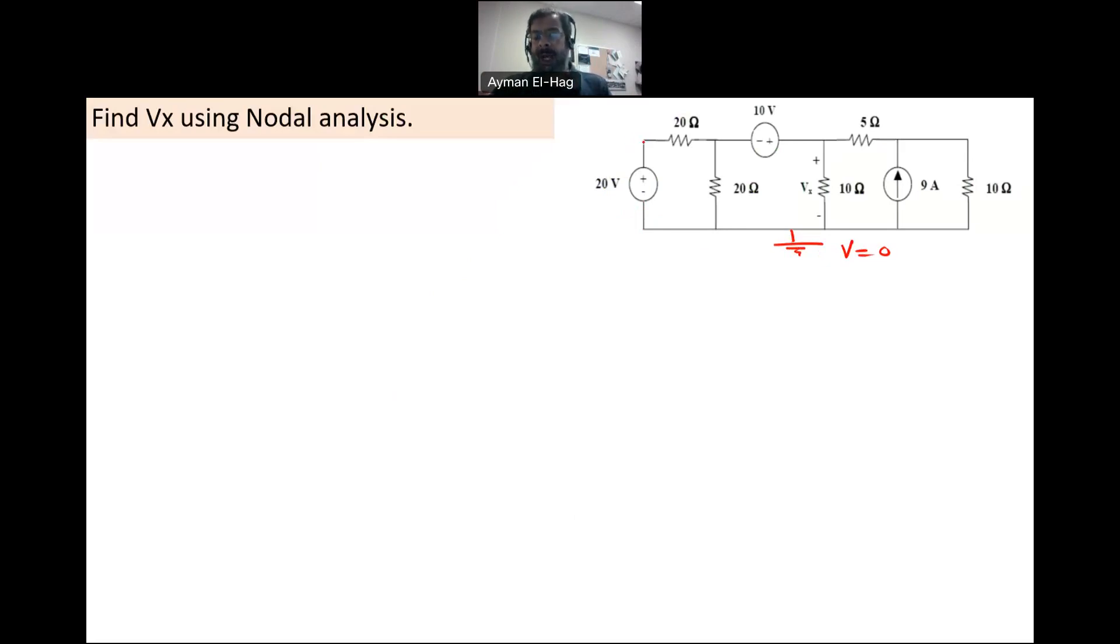Count the other nodes, n minus one nodes other than the reference. So we have here one, two, three, and four. So we have basically four nodes. Then we will assign a voltage variable to each node. So we have V1, V2, V3, and V4. This is how we prepare the question.